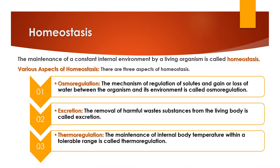After discussing the term homeostasis, we will now discuss how any organism can maintain its internal environment. Organisms have various aspects of homeostasis which we have classified into three categories: the first one is osmoregulation, the second one is excretion, and the third one is thermoregulation. Osmoregulation is actually the maintenance of internal water balance and water content of a living organism.